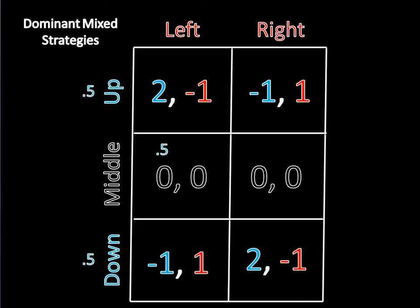Now suppose player 2 moves right. Here, player 1 earns negative 1 50% of the time, and 2 the other 50% of the time, which again adds up to 0.5. And we'll leave that here.